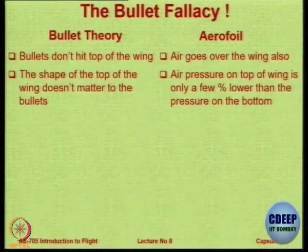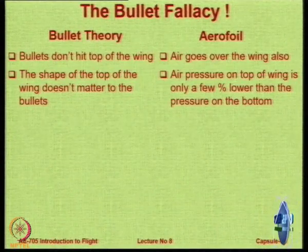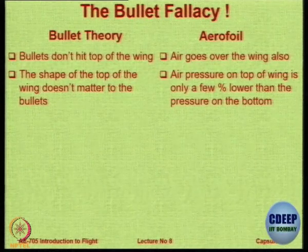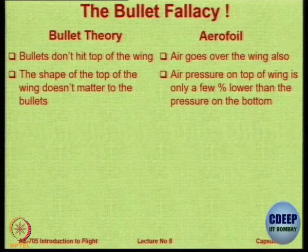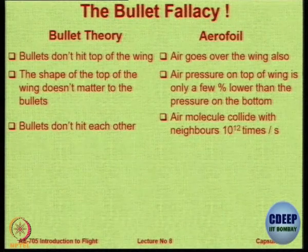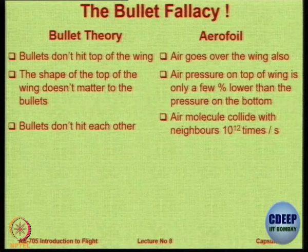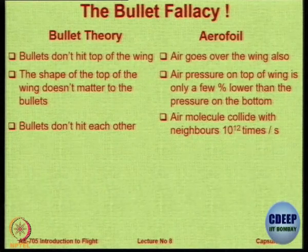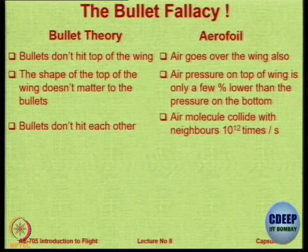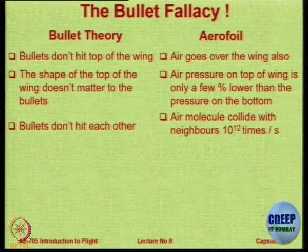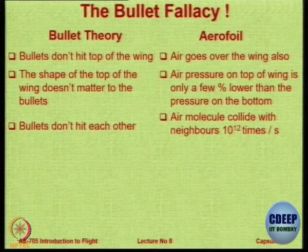Secondly, the shape of the wing does not matter to the bullets except for the angle of reflection, whereas the air pressure on the top of the wing is only a small percentage lower than on the bottom. The bullets are all going parallel; they do not hit each other. But air particles are not always flying parallel — air particles are actually colliding with each other. There is something called the kinetic theory of gases which tells you about Brownian or normal motion. In Brownian motion, air particles are colliding with each other a huge number of times, so they are not a bunch of bullets moving independently; they are a huge number of particles colliding and moving around.